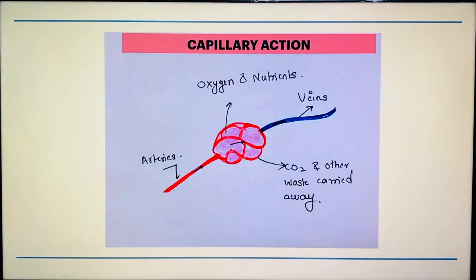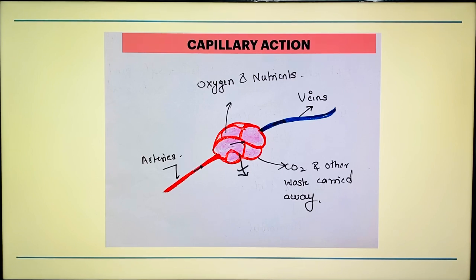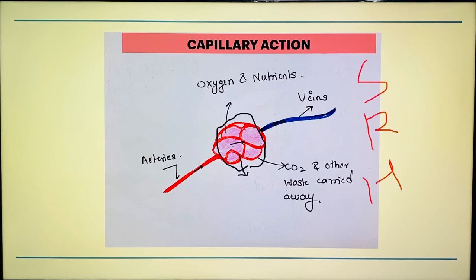Let's see what happens when there is injury to the capillaries. You can see there is a network of capillaries connecting the small arteries and small veins. The capillaries help in transferring oxygen and nutrients and carrying away carbon dioxide and other waste material. When there is injury to the capillaries, the capillaries get dilated; along with that, there is increased permeability and increase in surface area. Because of that, there will be swelling, redness, and heat.